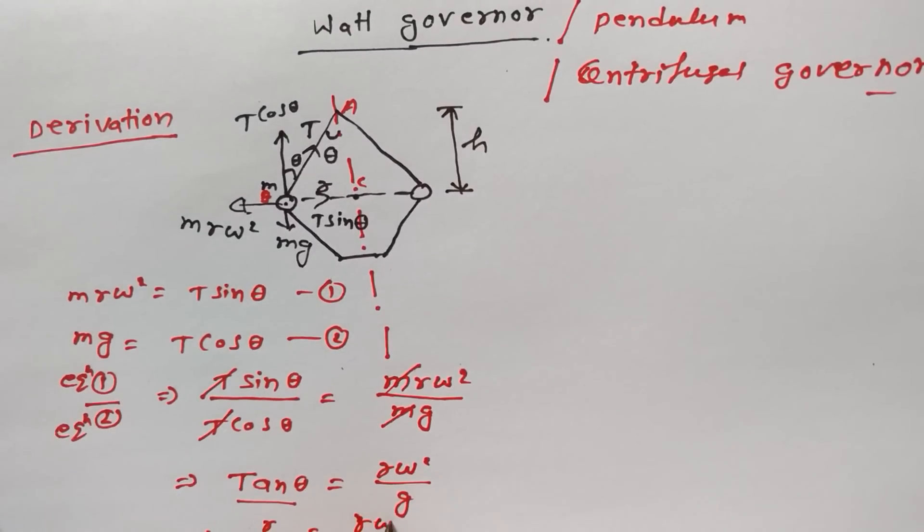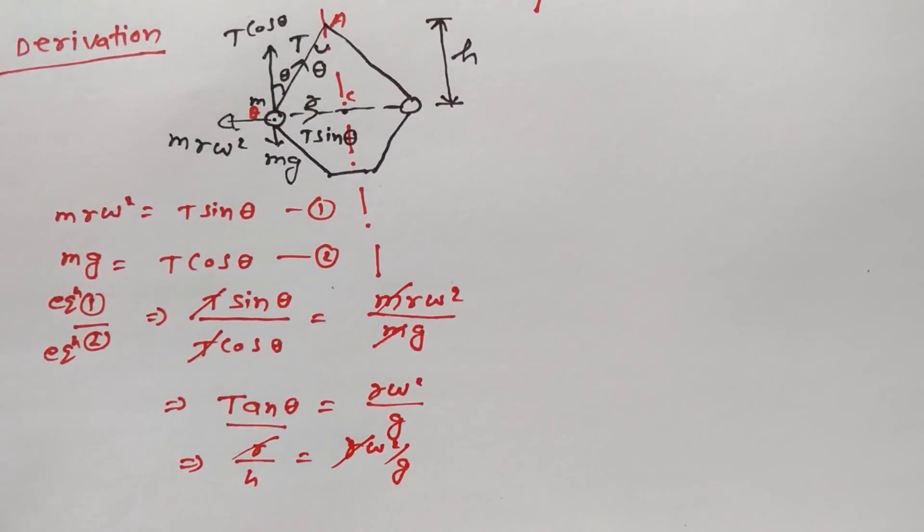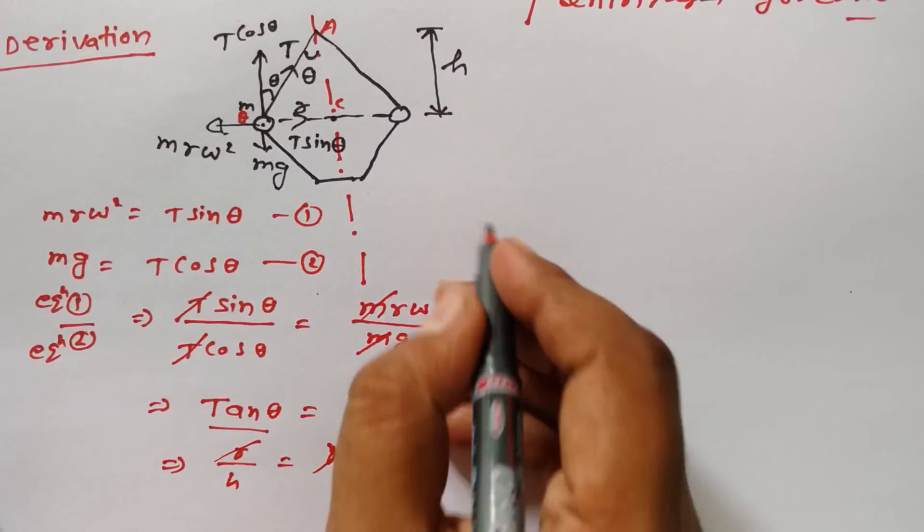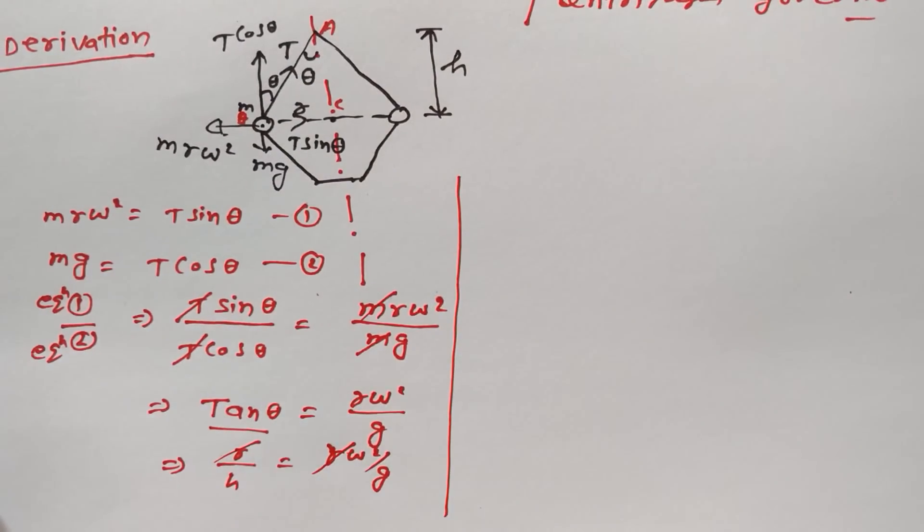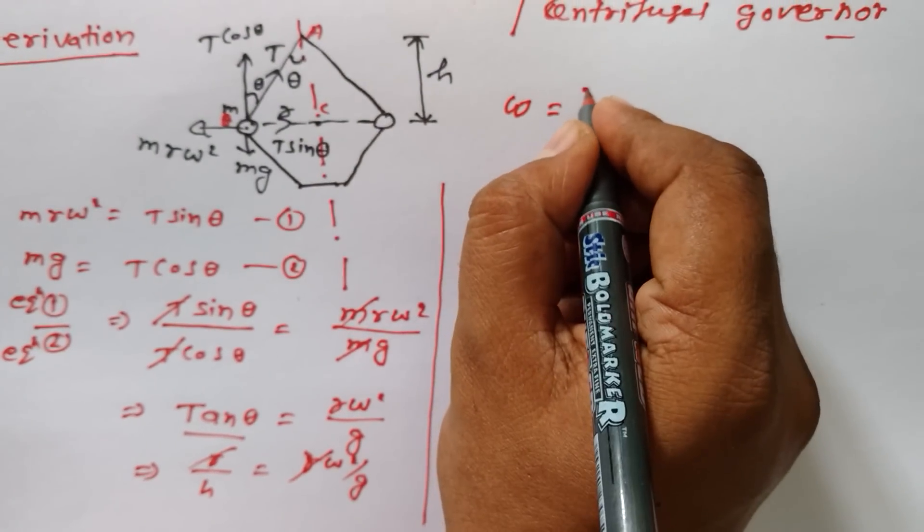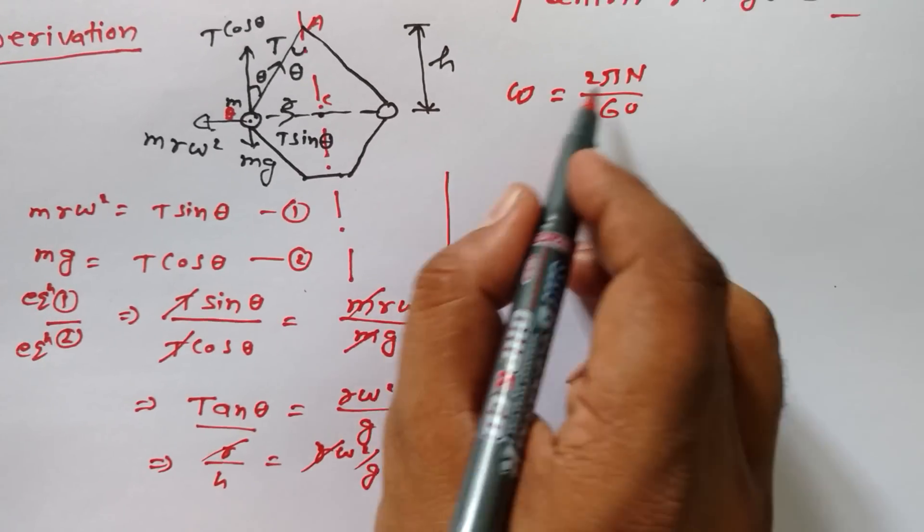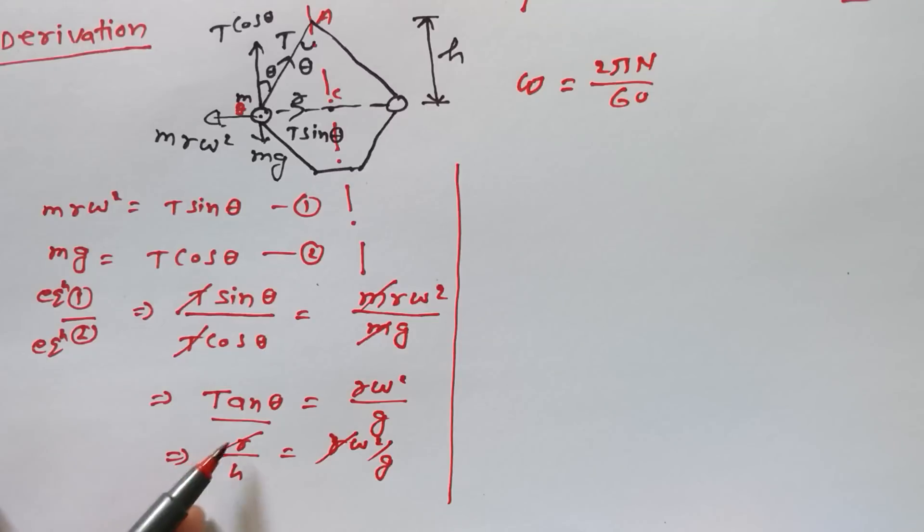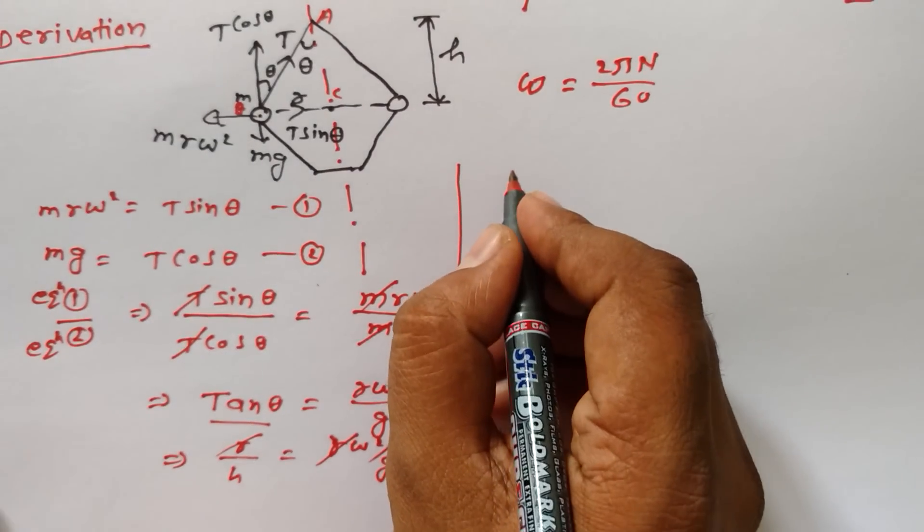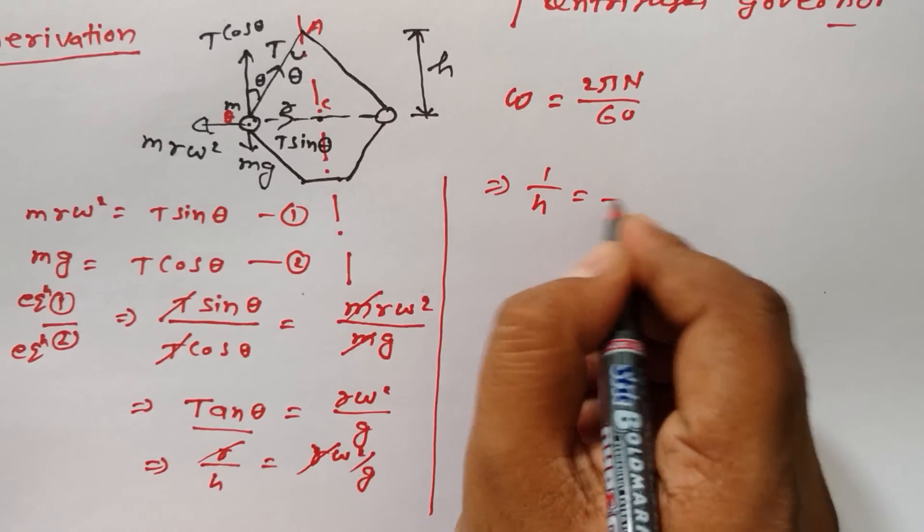So h equals r*ω²/g, r cancels out. Angular velocity we know is ω = 2πn/60. If we put this value here, then let me simplify: 1/h equals (2πn/60)²/g.